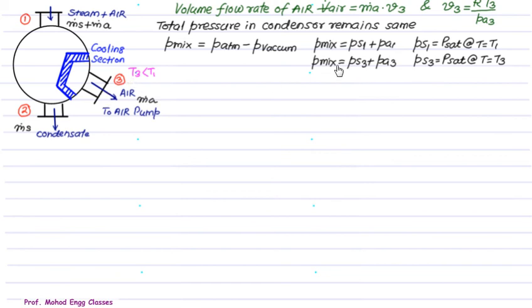And P mix at section 3, we have PS3 plus PA3. PS3 is again, we can obtain as PSat at temperature T3.